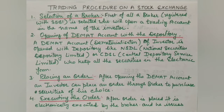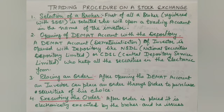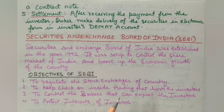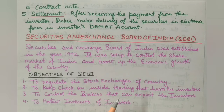The fourth step is executing the order. After the order is placed, it is electronically executed by the broker. Once the order is placed, the broker processes it electronically. A contract note is then issued to you, which mentions all details — the terms and conditions, the securities, the price, the brokerage or commission, the date and time, and everything.